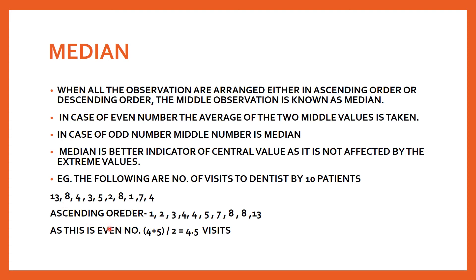For an odd number of observations - say 11 patients with one extra value of 15 after 13 - you arrange them and the middle value becomes your median. For 11 values, there are 5 values smaller than the middle and 5 higher. For example, the value 5 has five values smaller and five values higher, so 5 becomes the median - that is the middle value.